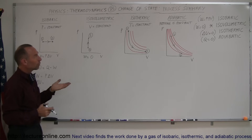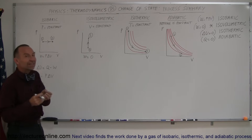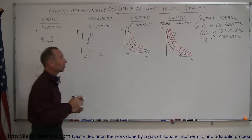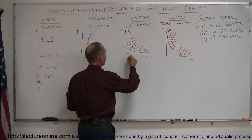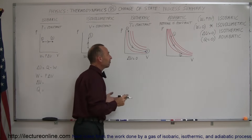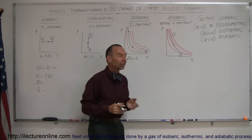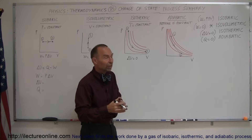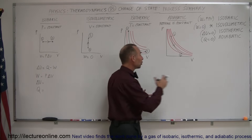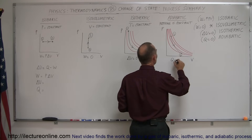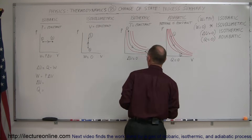In an isothermic process, since the temperature doesn't change, the internal energy cannot change, so ΔU = 0. Finally, in an adiabatic process, it happens so quickly that Q = 0 — there's no heat added or removed from the gas.